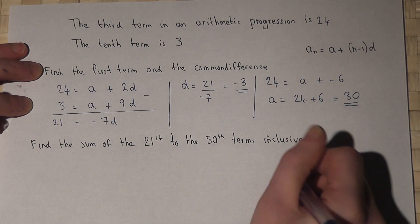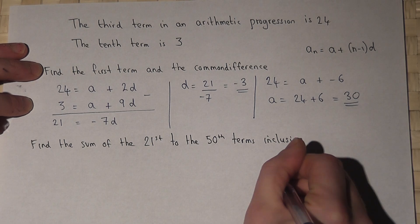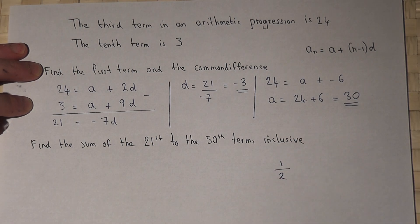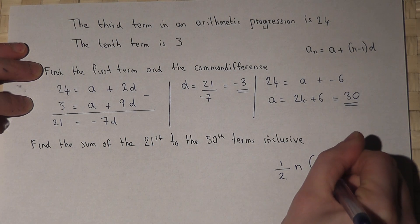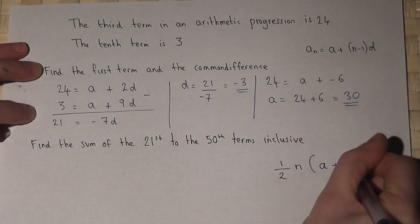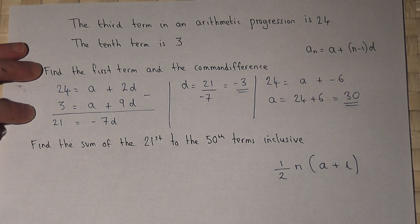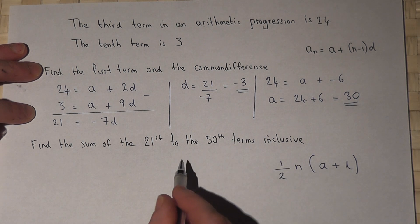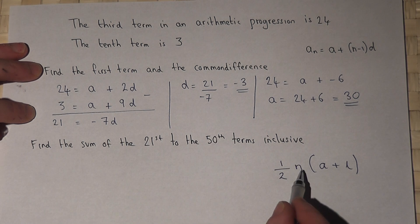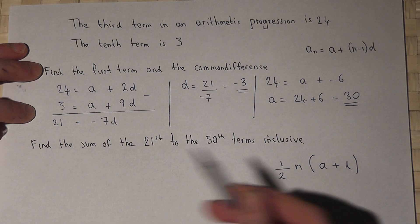a half n times a plus l. Now a is the first term in the sum you want to find, l is the last term in the sum you want to find, and n is the number of terms that you want to add together.